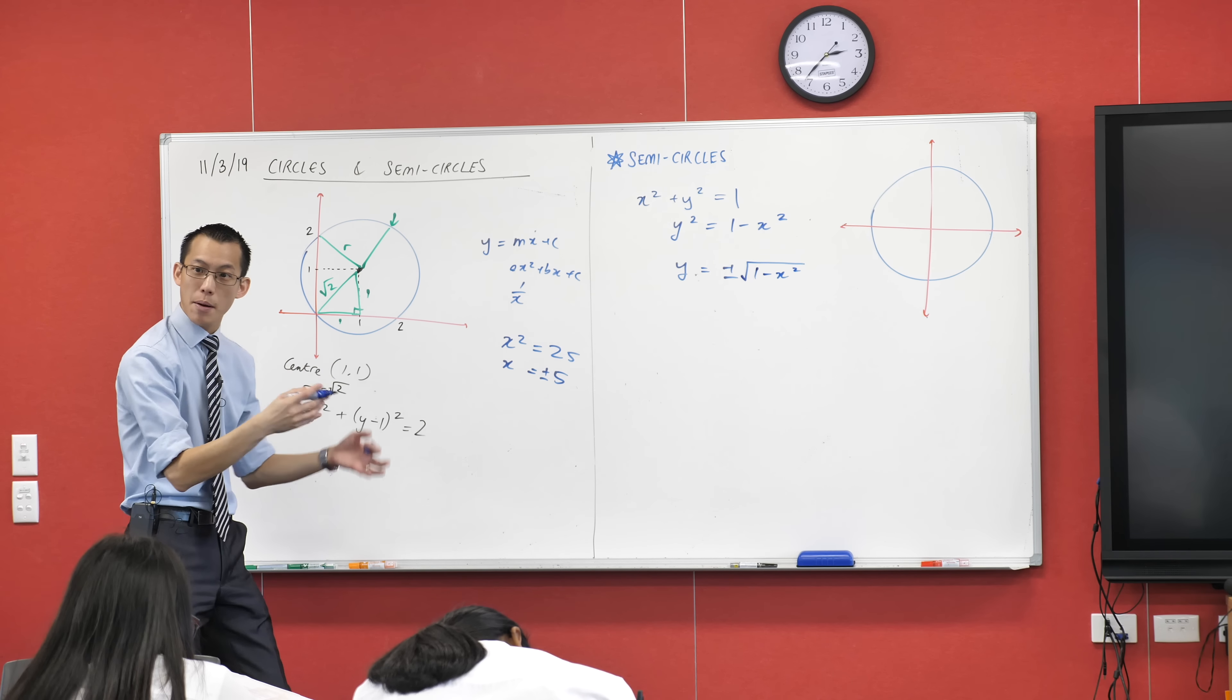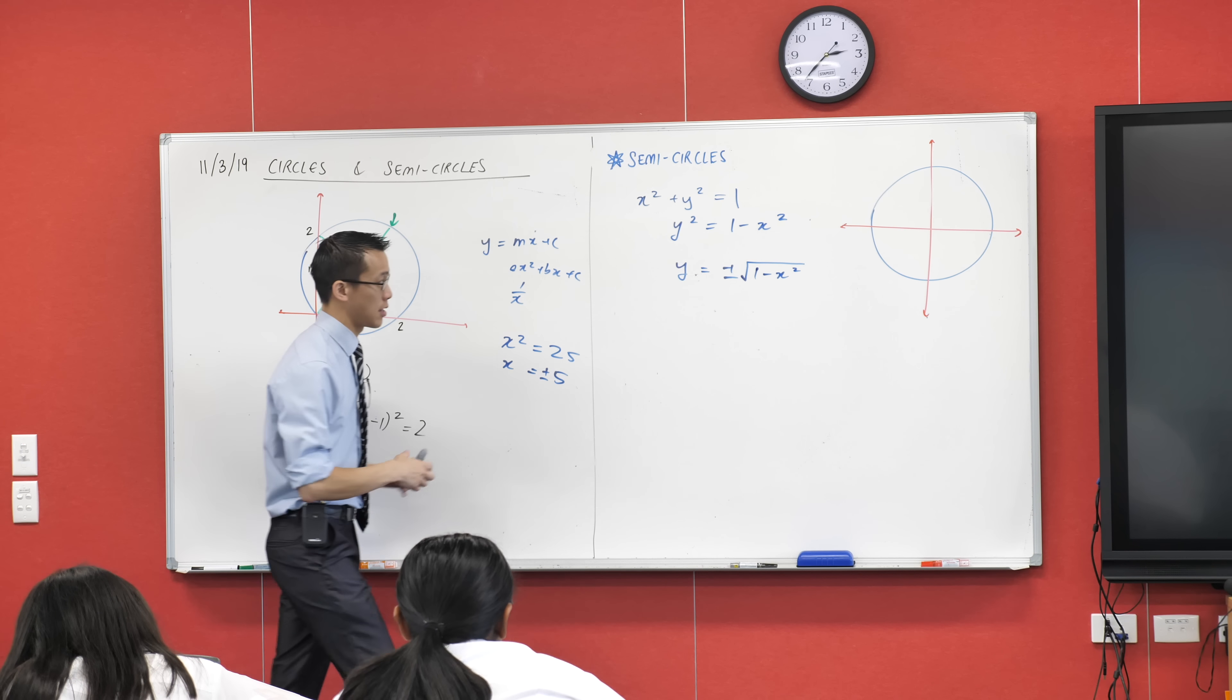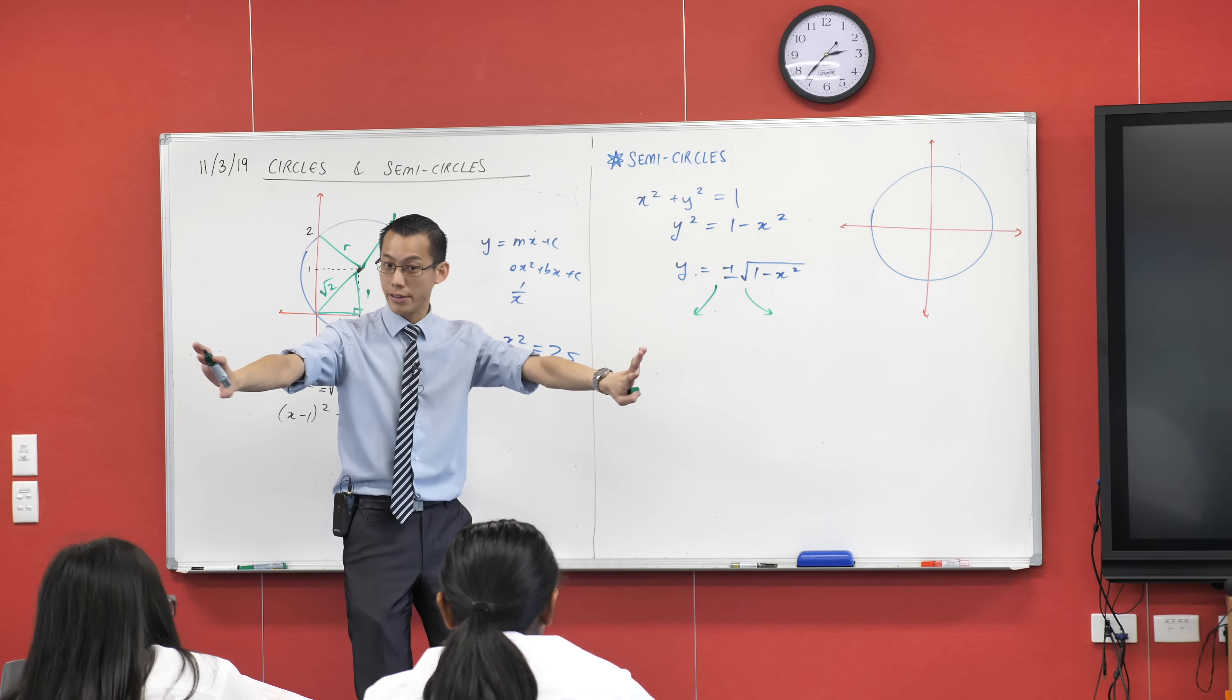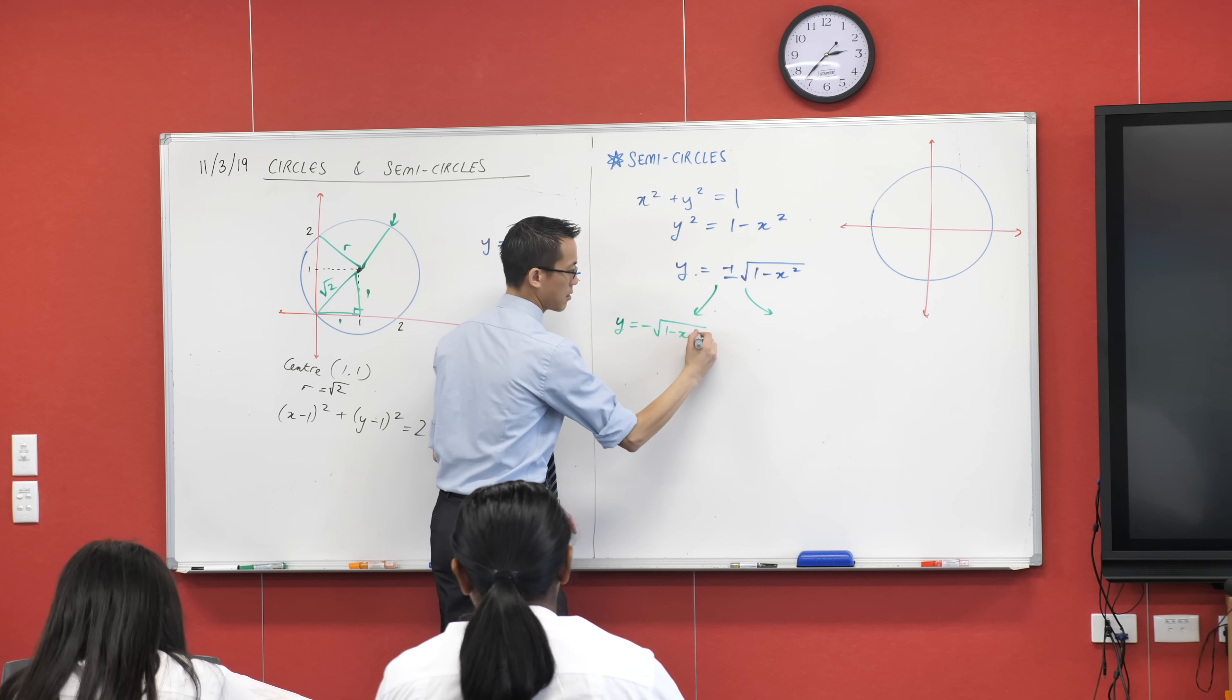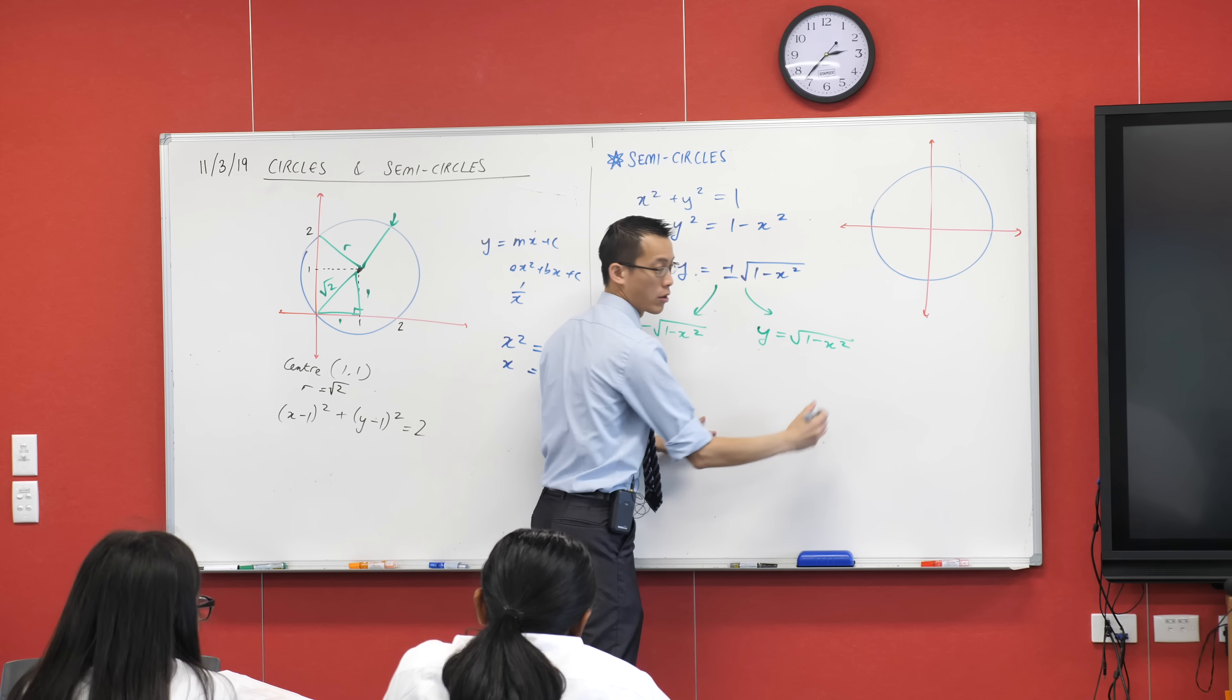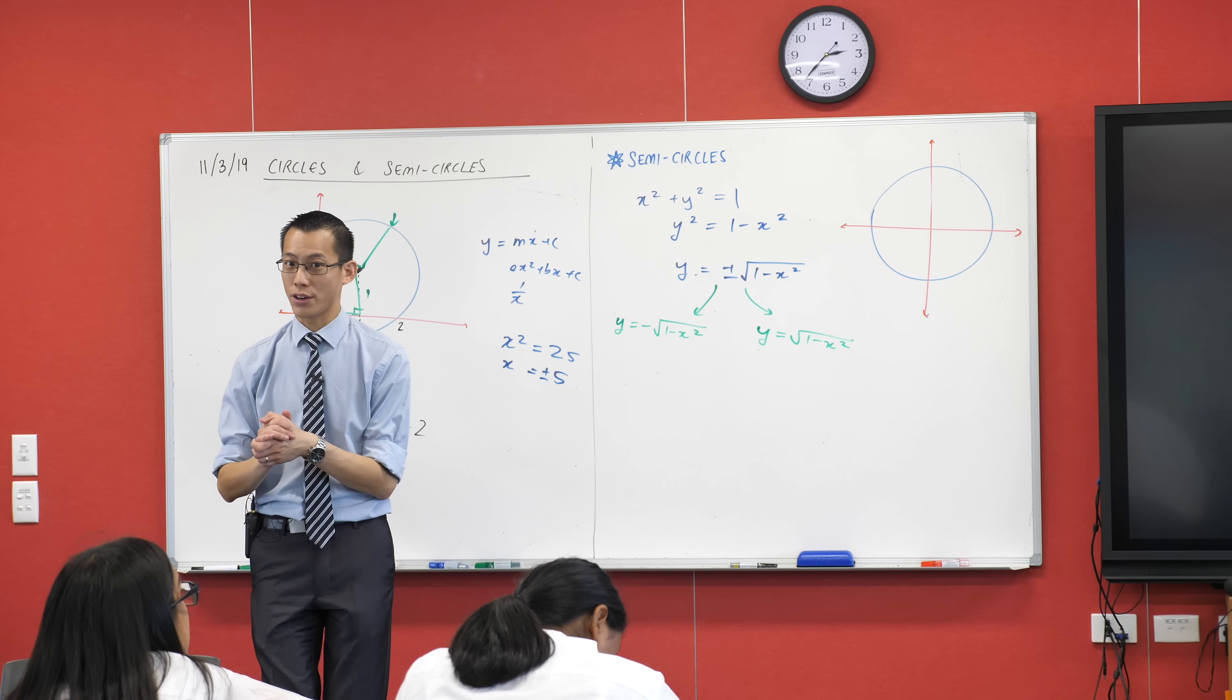Now, plus or minus is just a lazy mathematician's way of saying two separate things. This is shorthand for two completely separate things. There's the negative one, like this, and then there's also the positive one when there's a plus.